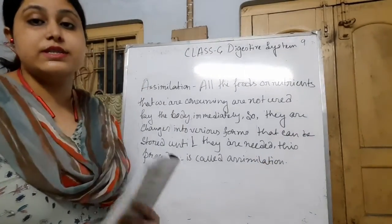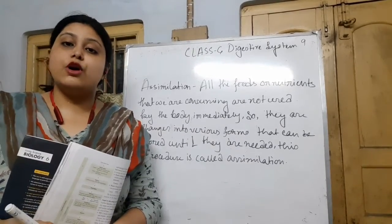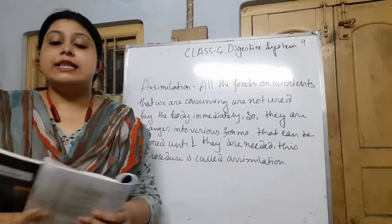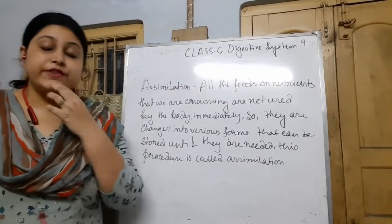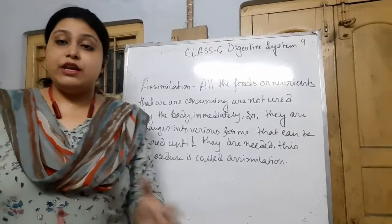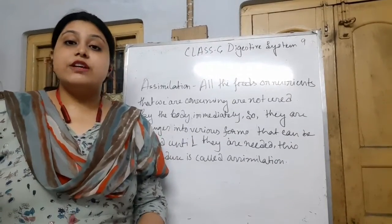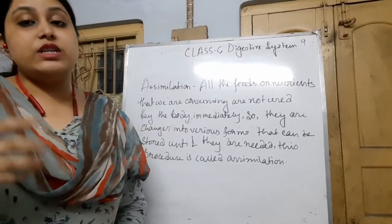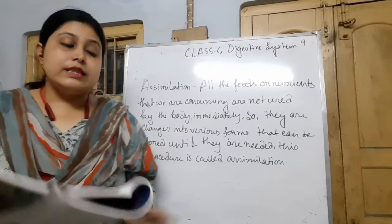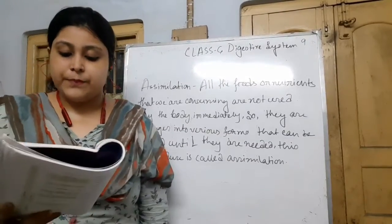As I already told you, the foods that we are consuming — our body cannot absorb or use all of it at one time. Some foods are stored in various organs like our muscles in the form of glycogen, and also fats in our adipose tissue for future use. When our body cannot get food, this storage can be used up. This procedure is called the assimilation of food.